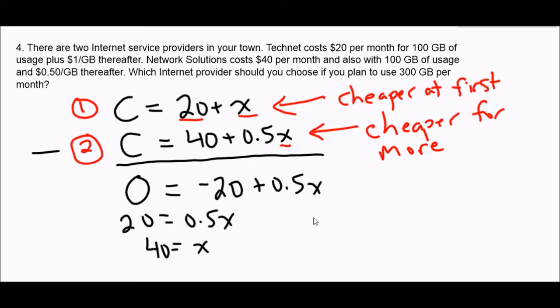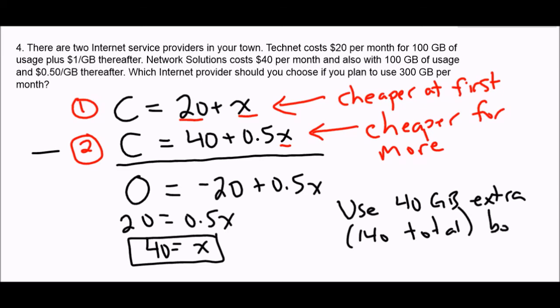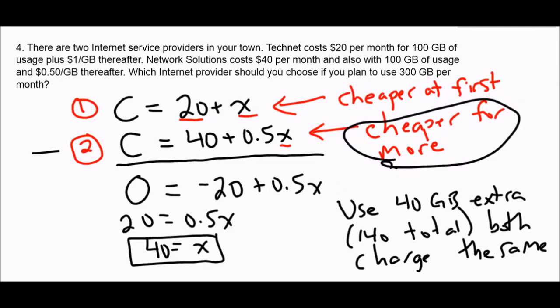So what that means is that if I use 40 gigabytes beyond the 100, so if I use 40 gigabytes extra, or if you want 140 total, then both companies charge the same. So if I'm using 300 gigabytes, I definitely want to go with company number two. Because before 40 extra gigabytes, the first company is cheaper. After 40 gigabytes, the second company is cheaper. So my answer would be that I want to go with network solutions.